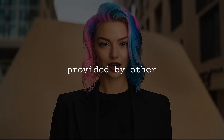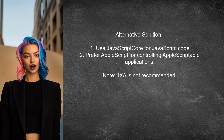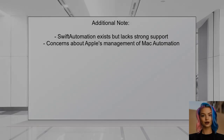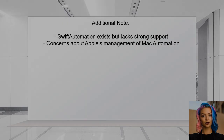Looking at answers provided by other users: one user suggests that JXA may not be the best choice. They recommend using the JavaScriptCore Objective-C API for running JavaScript code, as it is cleaner and easier. If you need to control AppleScriptable applications, they advise sticking with AppleScript, which is the officially supported method. They also mentioned Swift automation as an option, but expressed skepticism about its support due to Apple's management of Mac automation.